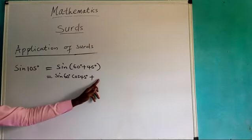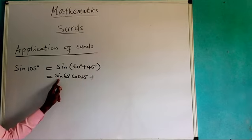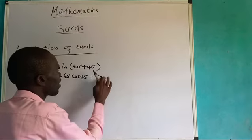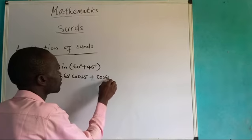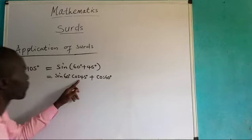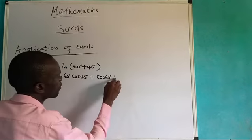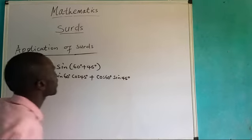Therefore now, I will have the next one. Here I will have sine first. The next thing I will have now, that will be cosine 60 degrees. The next one I will follow, I will have sine, that will be sine 45 degrees.